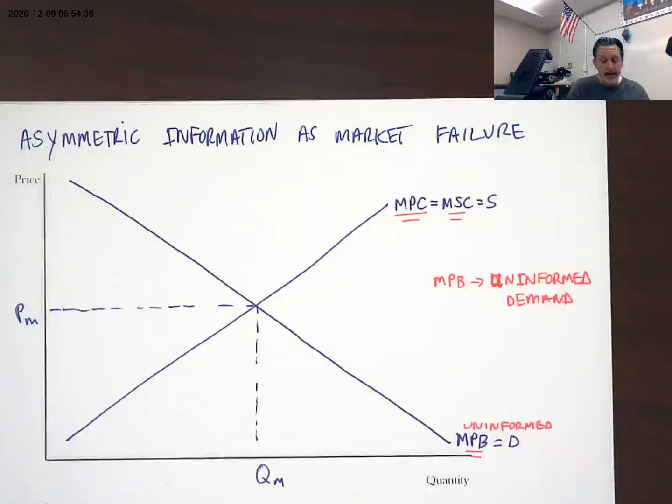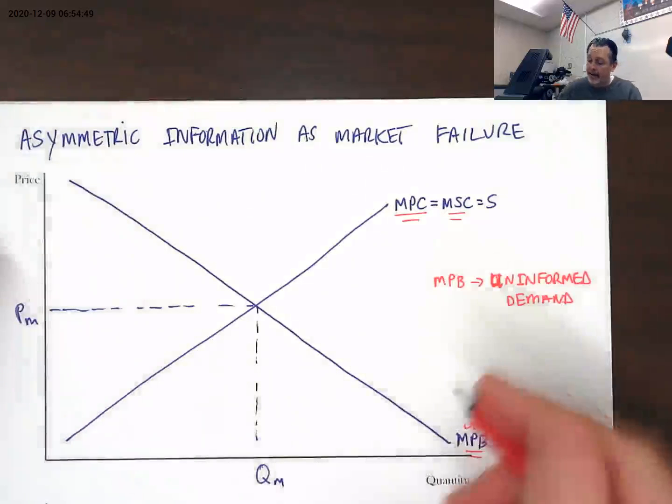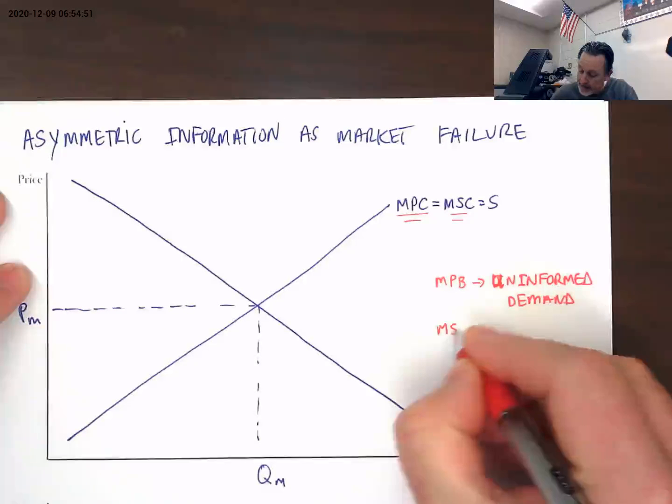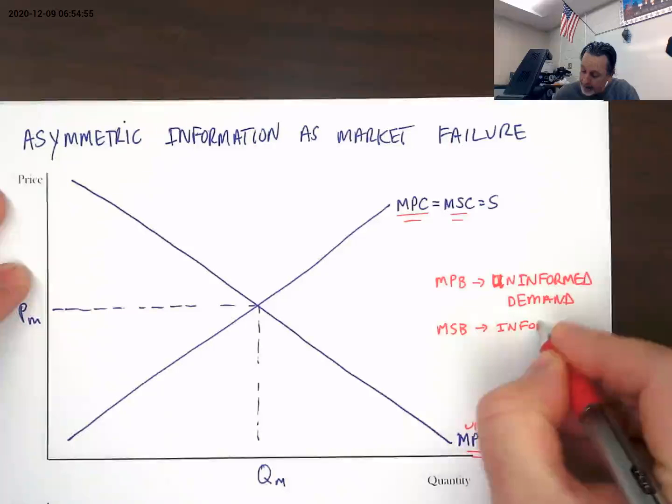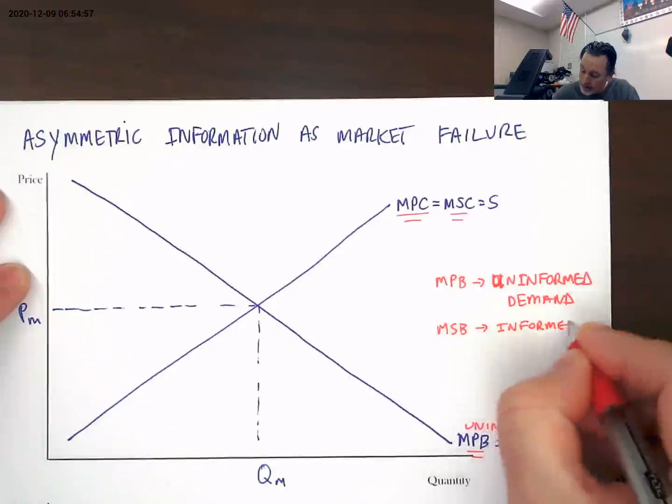Had it ever been in a flood, something along those lines, the informed demand might be in a much different place on this model than the uninformed demand. So in this particular case, society's best interest would be served by informed demand.